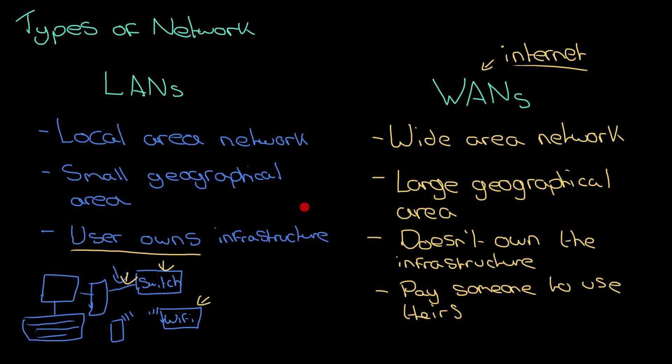So if you remember those key differences — a LAN is a small geographical area, a WAN is a large geographical area, and with a LAN you own the infrastructure whereas with a WAN you don't — then you should be able to easily identify whether you're dealing with a LAN or a WAN.